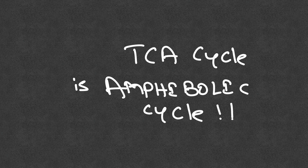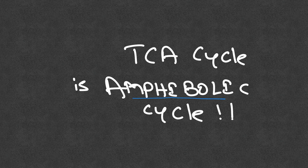In this video, I will be explaining why the TCA cycle is called an amphibolic cycle. The term 'amphibolic' means that TCA cycle intermediates can go into anabolic reactions — used to synthesize new molecules — or they can undergo catabolism and break down into carbon dioxide and be used for energy. Since TCA cycle intermediates go into both catabolism and anabolism, the TCA cycle is called an amphibolic cycle.